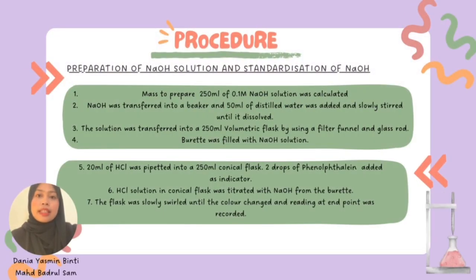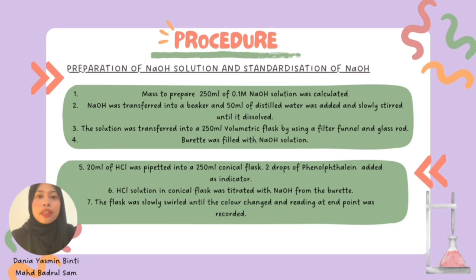Preparation of sodium hydroxide solution and standardisation: the process to prepare 250 mL of 0.5 M NaOH solution was completed. NaOH was transferred into a beaker, 50 mL of distilled water was added and slowly stirred until dissolved. The solution was then transferred into a 250 mL volumetric flask using a filter funnel and glass rod. The burette was filled with NaOH solution, and then 20 mL of hydrochloric acid was pipetted into a 250 mL conical flask. Two drops of phenolphthalein were added as an indicator, and the HCl solution was titrated with NaOH from the burette, swirling until the color changed, and the endpoint reading was recorded.